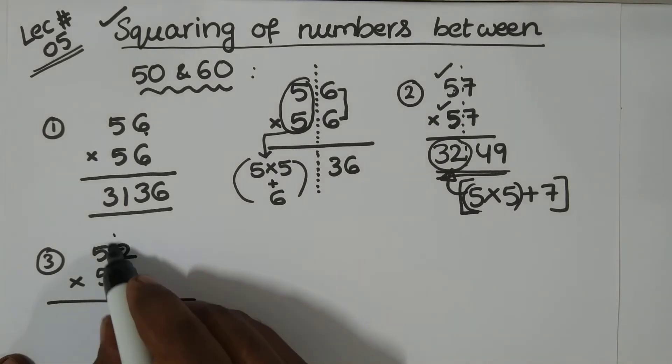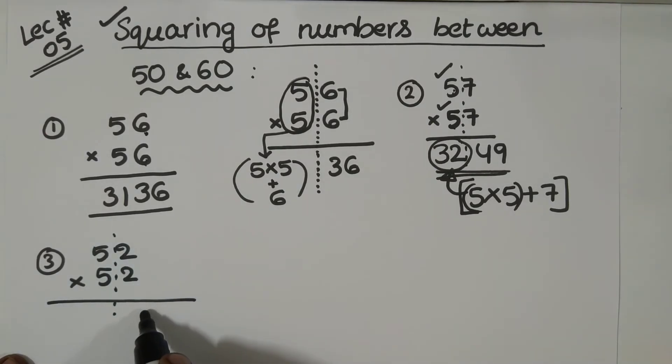So, what we get now? So, 2, 2 is 4. But always in the right hand side, we should take two digits. When it is 4, take 0, 4. Okay? 2, 2 is 4.